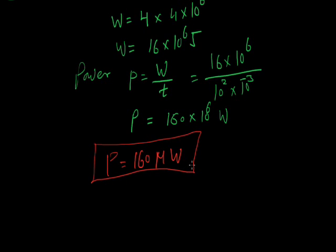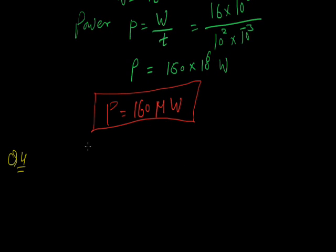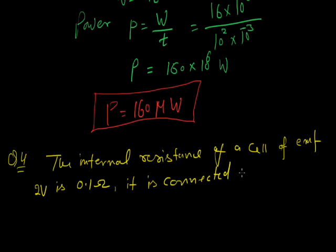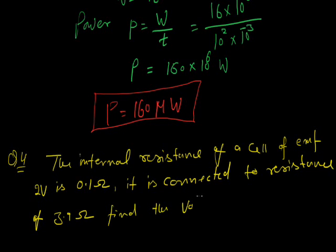This is the power at the time of striking the lightning. Then come to question number 4. The internal resistance of a cell of EMF 2 volt is 0.1 ohm. It is connected to resistance of 3.9 ohm. Find the voltage across the cell.